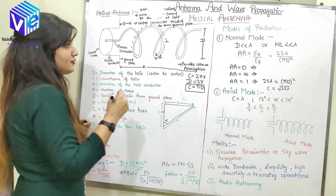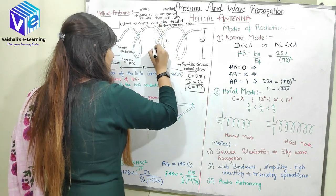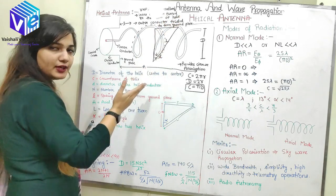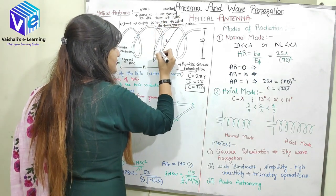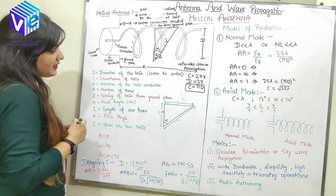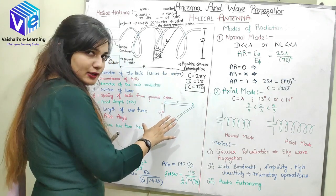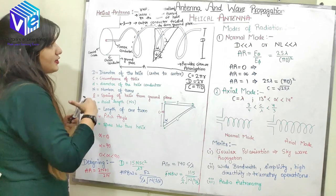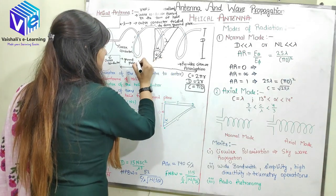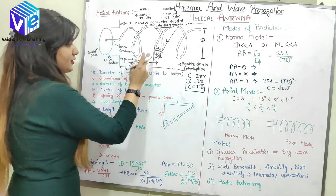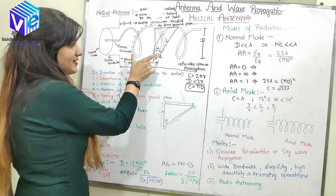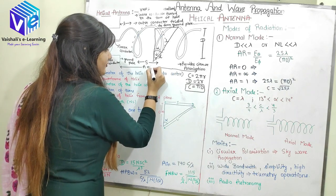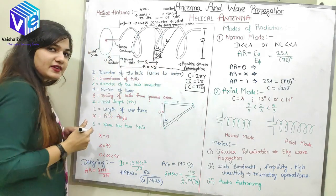Alpha is the pitch angle. If I have a perpendicular to the turn and a tangent to the turn, the angle between these two is alpha, called the pitch angle. Capital S is the space between two turns of the helix. If I know the spacing between two turns and the total number of turns, the axial length A can be represented as N multiplied by S, that is, total number of turns multiplied by spacing between the two turns.